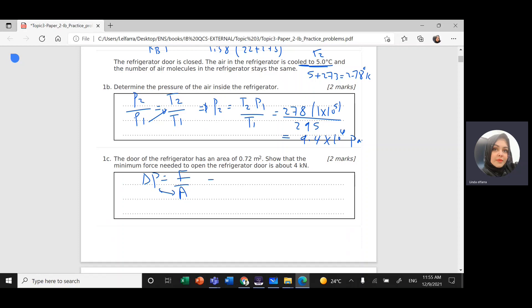F equals change in pressure times area. Change in pressure is final minus initial: 1 times 10 to the power 5 minus 9.4 times 10 to the power 4, times area 0.72.